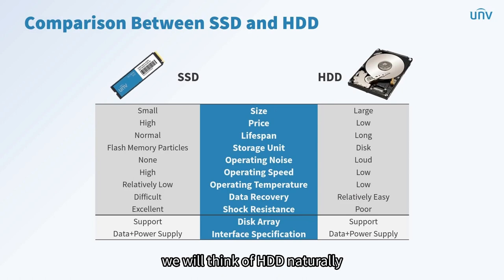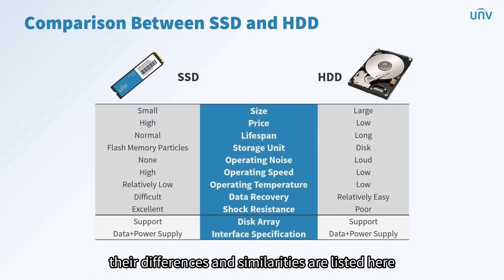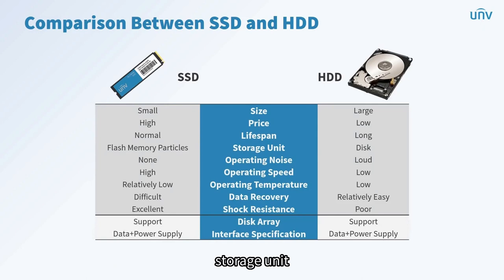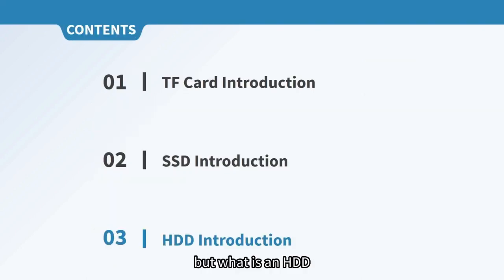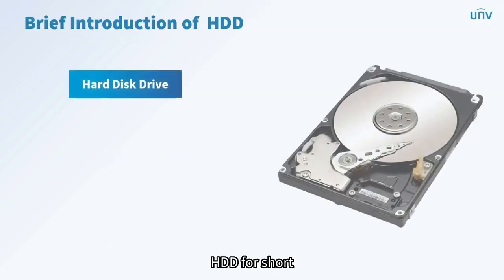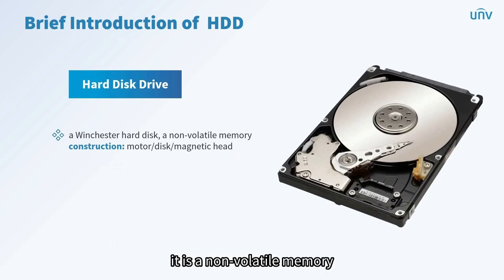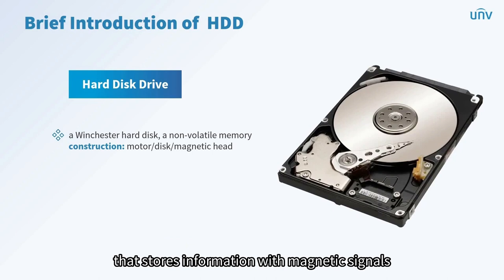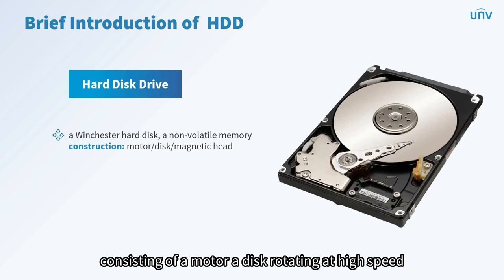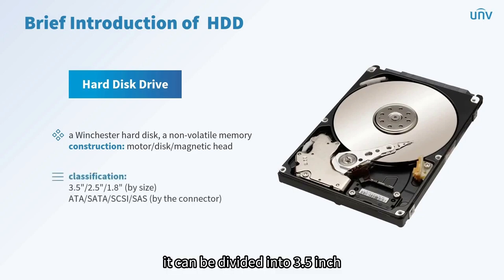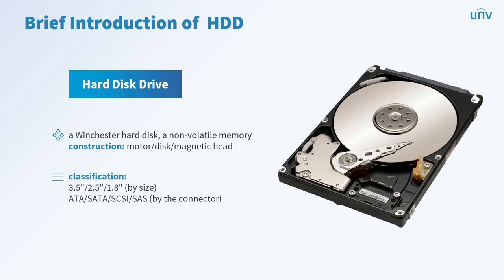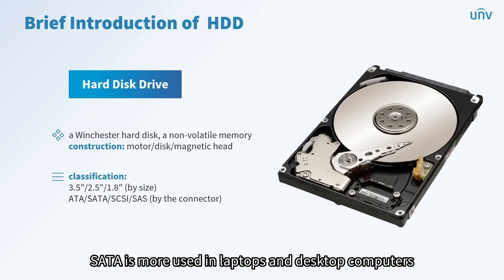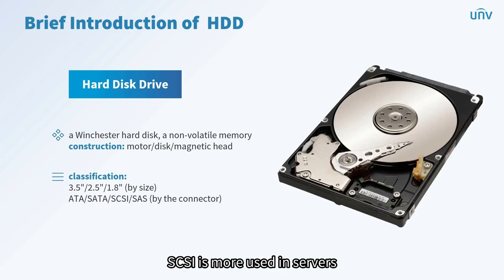When we mention SSD, we naturally think of HDD. Their differences and similarities include size, price, lifespan, storage unit, and operating speed. Hard disk drive (HDD) generally refers to a Winchester hard disk — a non-volatile memory that stores information with magnetic signals. It consists of a motor, a disk rotating at high speed, and a magnetic head suspending above the disk. HDDs are classified by size as 3.5 inch, 2.5 inch, and 1.8 inch, and by connector type as ATA, SATA, SCSI, and SAS. ATA is obsolete; SATA is used in laptops and desktops; SCSI is used in servers; and SAS is the latest interface type with a transmission rate of 3.0 Gbps.